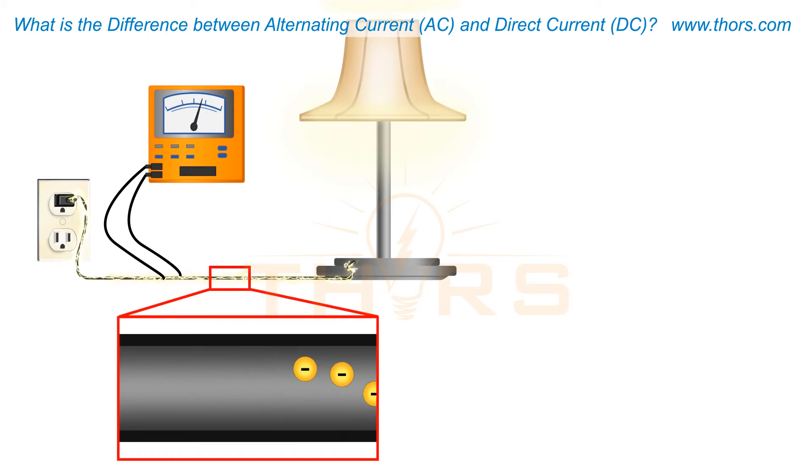Alternating Current reverses its direction many times a second at regular intervals. The number of reversals per second is known as the frequency, which is measured in Hertz.